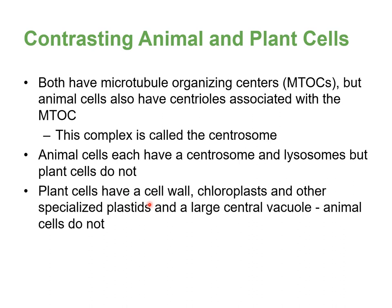Plant cells have a cell wall made out of cellulose — different from prokaryotes, whose cell walls are made of peptidoglycan. Plants also have chloroplasts, other specialized plastids, and a large central vacuole — none of which are in animal cells. So to summarize: animal cells have centrosomes and lysosomes that plant cells don't; plant cells have a cell wall, chloroplasts, and a central vacuole that animal cells don't.